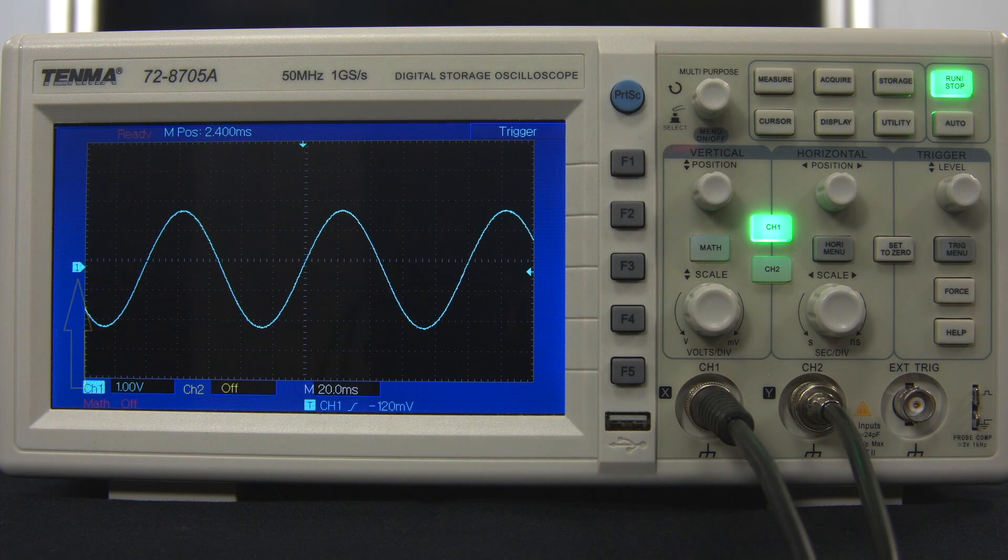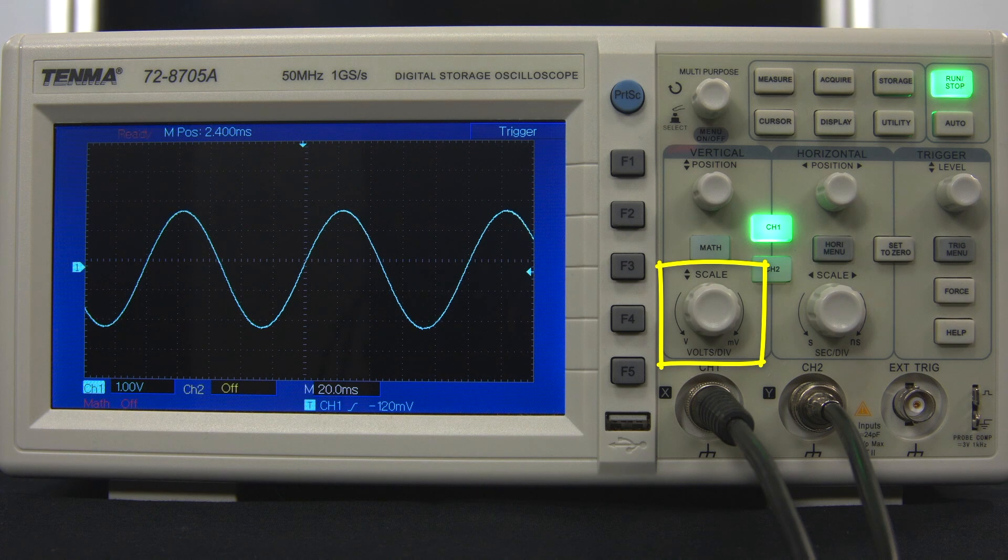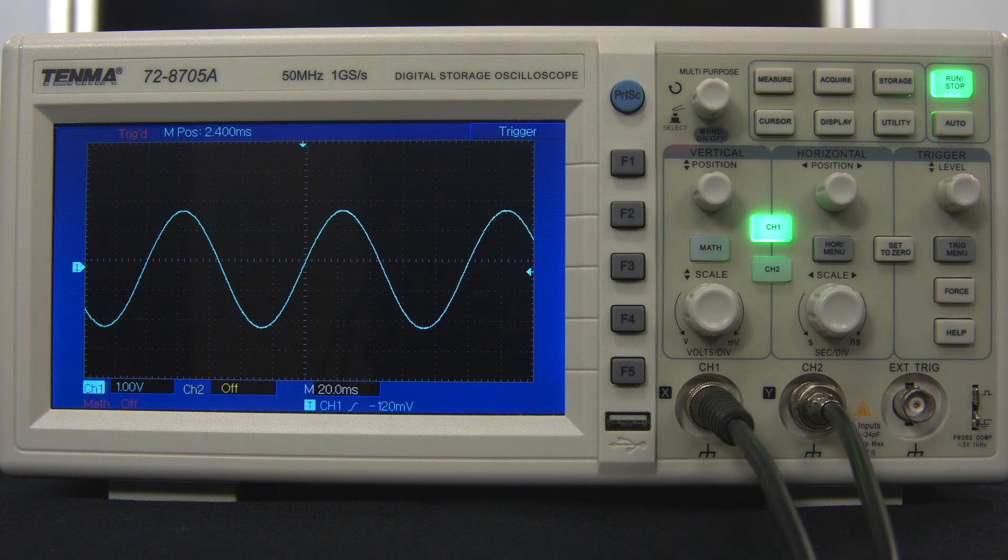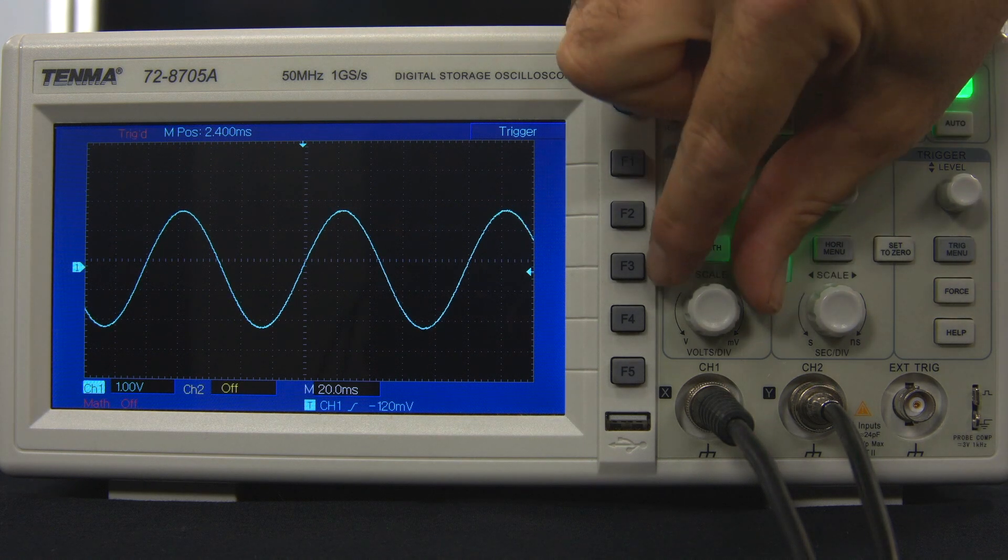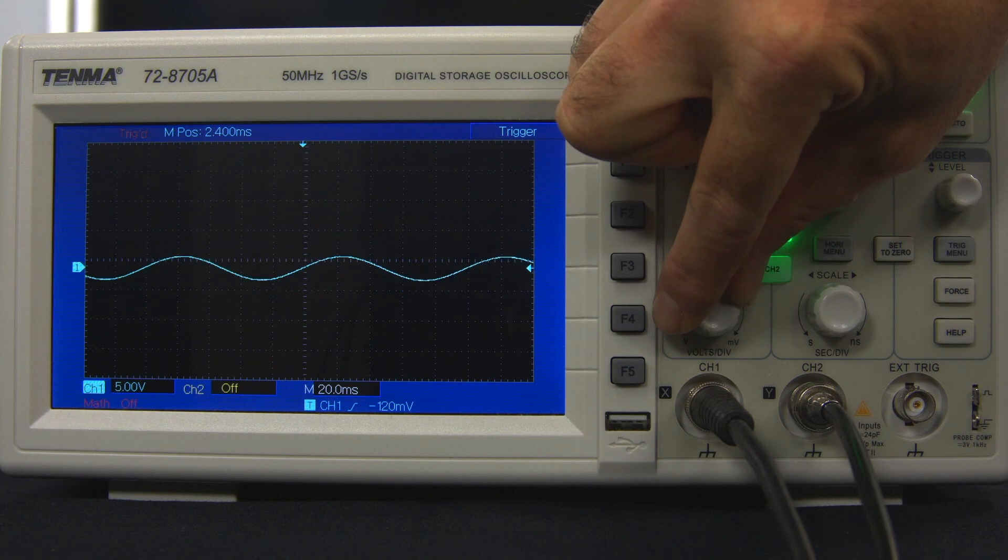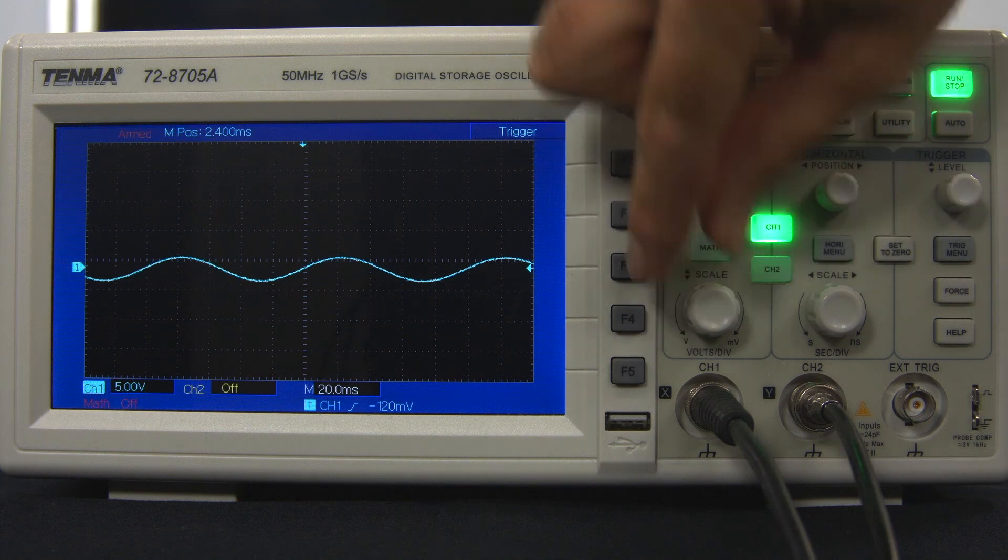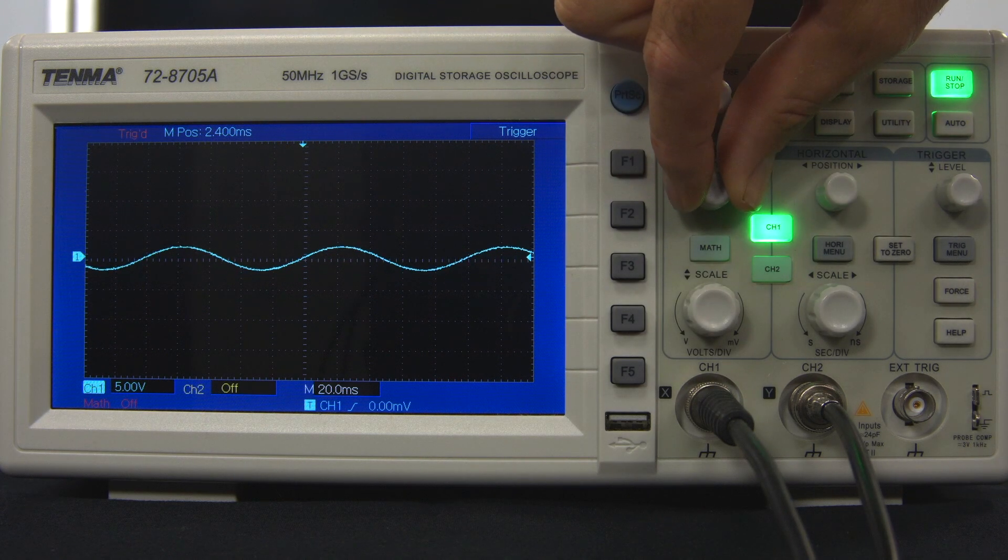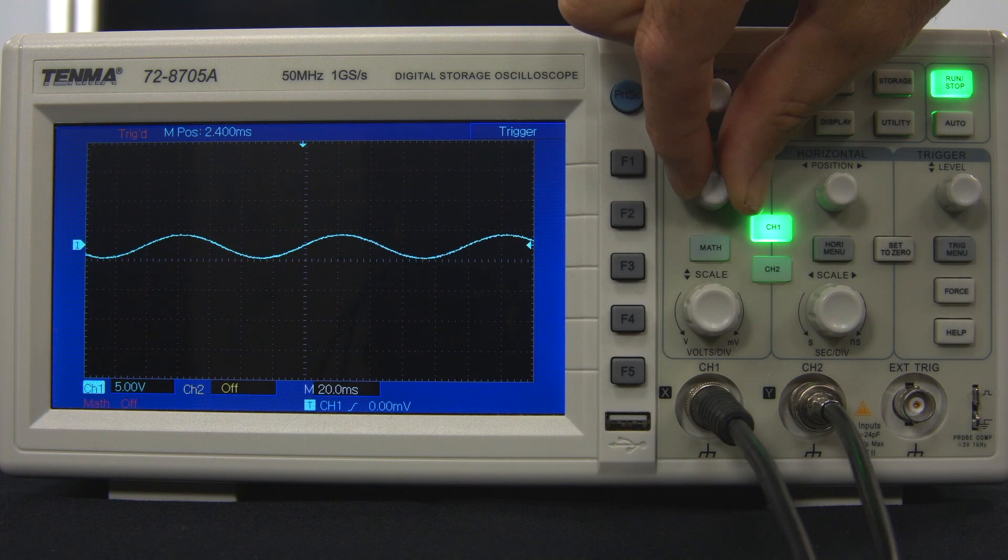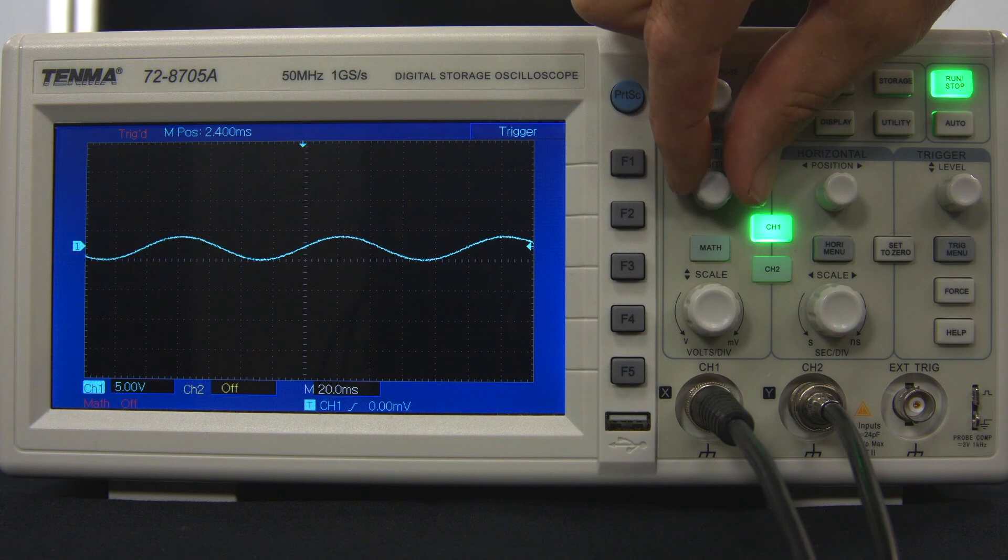The other main vertical control is the scale, which can increase or decrease the volts per division on the display. If I increase the volts per division, then the signal is displayed smaller. For example, now the scale is five volts per division. And if I move the vertical position, you can see that the signal variation is about four-fifths of a vertical division. So four-fifths of five volts, which is four volts.